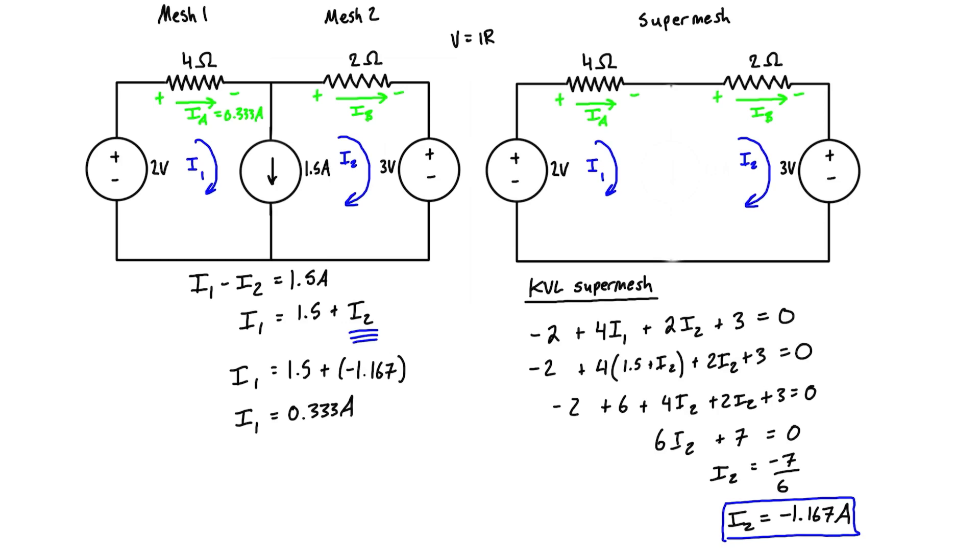Now for IB, we calculated I2 to be negative 1.167 amps. And IB is equal to I2, so IB is equal to negative 1.167 amps. And that basically just means we have to switch the direction. And ultimately, IB is really going to be going this way, to the left, with a value of 0.167 amps.